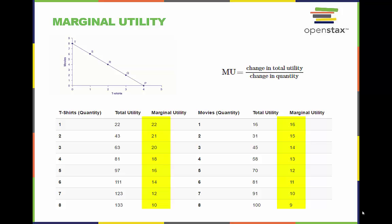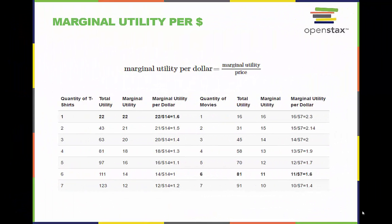We can see on our table of data that the marginal utility for each additional unit is getting smaller as we consume more units. This is called the law of diminishing marginal utility. Because the price per unit for t-shirts and movies are not equal, Jose finds it difficult to compare the two — that's why we must divide the marginal utilities by the price to allow us to compare them.